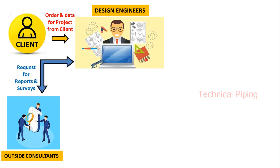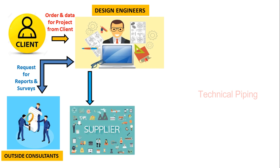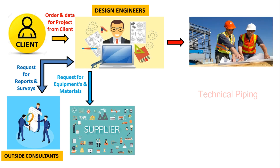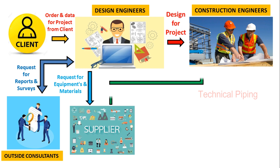Once the designer finalizes the plant design, they send a request to suppliers for manufacturing the materials and equipment. At the same time, plant design data and drawings are sent to construction engineers to start up the plant construction. The supplier then feeds the materials and equipment to the construction team.